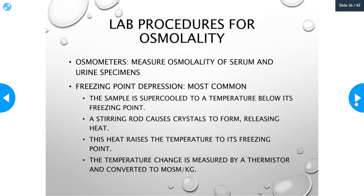For lab procedures for osmolality, we use an osmometer in the lab. We can use the same osmometer to measure the osmolality of both serum and urine specimens. It works by freezing point depression — the most common method. The sample is supercooled to a temperature below its freezing point but remains liquid. A stirring rod causes crystals to form; as the solution crystallizes it releases the heat of fusion, which raises the temperature back to the freezing point of that solution. The temperature change — how low the freezing point is — is measured by a thermistor and converted to milliosmoles per kilogram. The more concentrated a solution is, the lower its freezing point will be.